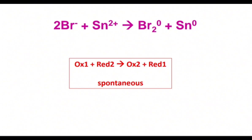We should know that oxidizer one and reducer two, when they react together and give the products oxidizer two and reducing agent one, such a process will be spontaneous. How to identify oxidizer one, oxidizer two, reducer one, and reducer two? Let's see.